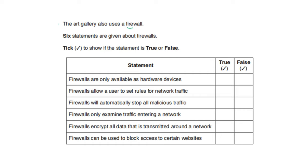The art gallery also uses a firewall. Six statements — tick true or false. Firewalls are only available as hardware devices — false, firewalls are also available as software. Firewalls allow a user to set rules for network traffic — true. Firewalls will automatically stop all malicious traffic — false. Firewalls only examine traffic entering a network — false, they examine both incoming and outgoing traffic. Firewalls encrypt all data transmitted around the network — false, that is not the firewall's responsibility. Firewalls can be used to block access to certain websites — true.